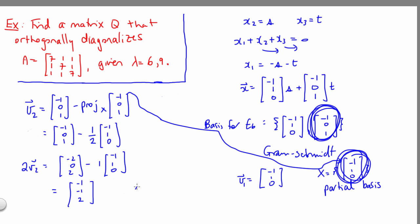At this point we can update our set x. It now consists of negative 1, 1, 0, as well as negative 1, negative 1, 2. And if we've done everything correctly, this should be an orthogonal set. So let's just check. Yep, dot product of these two vectors here is 0.